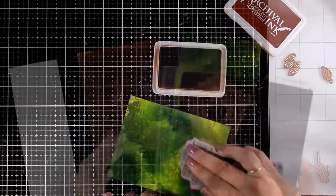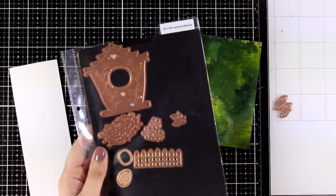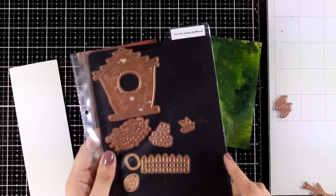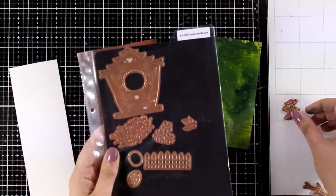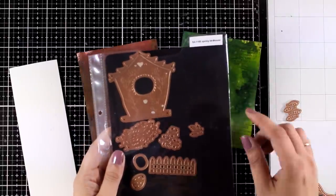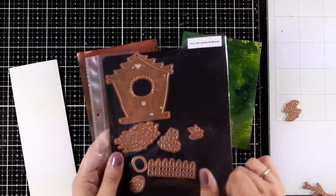So here is my spring set and I'm going to use the birdhouse from this one as well as the three little flowers. There are also leaves included in this set that you can use if you want to cut out these ones.